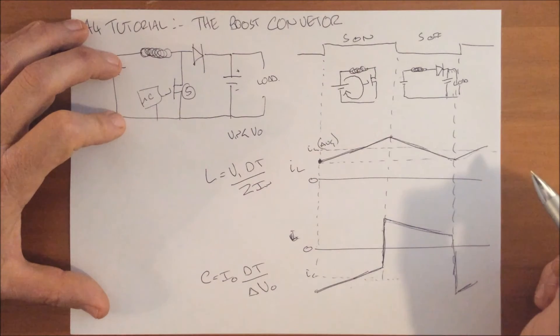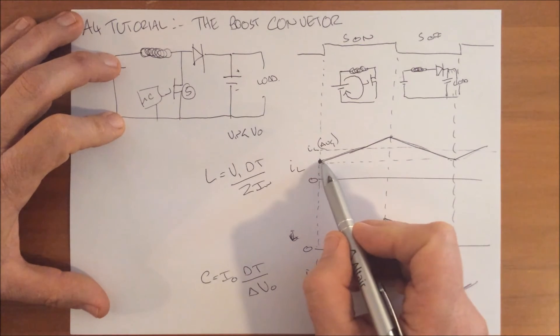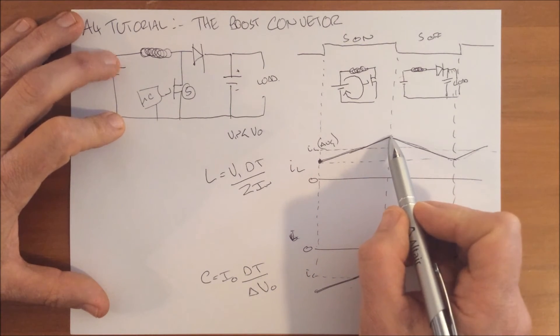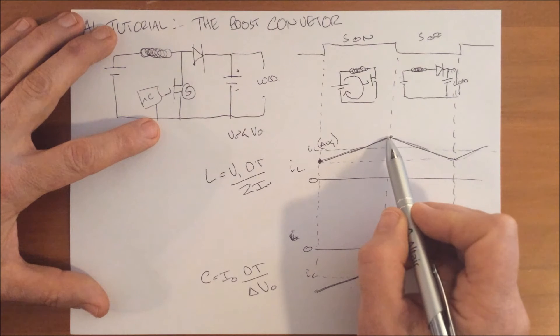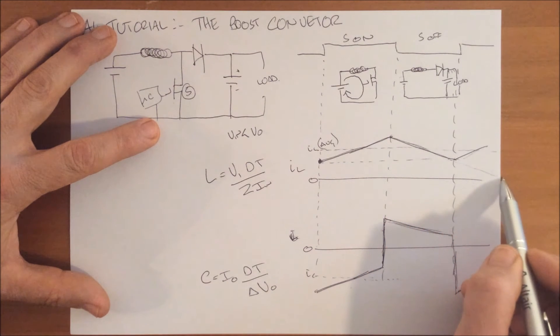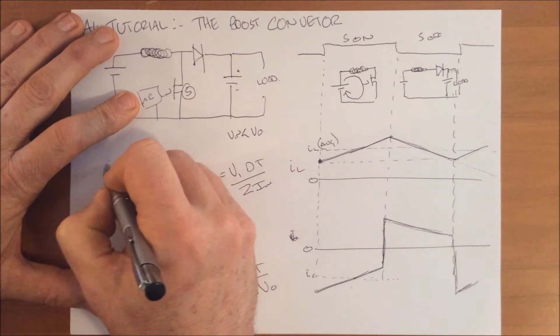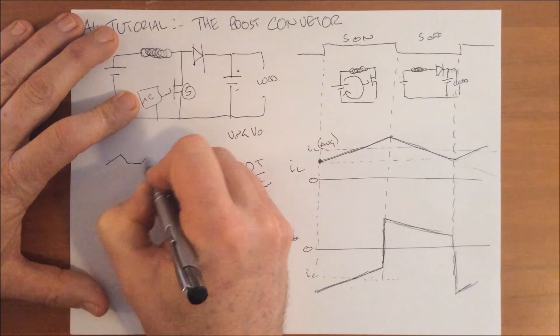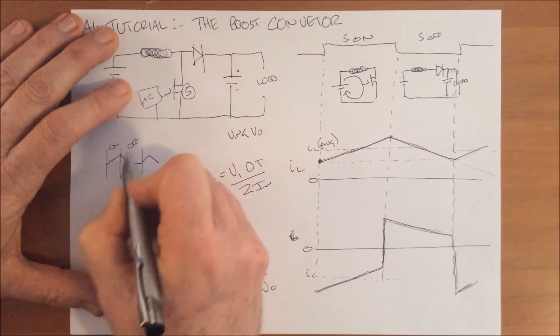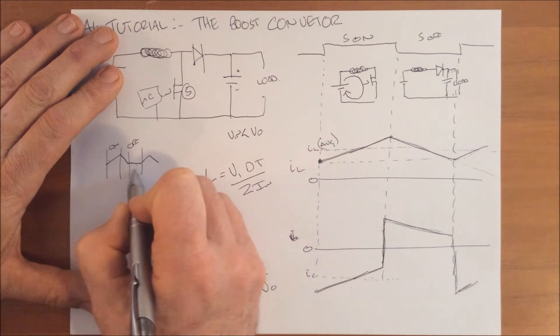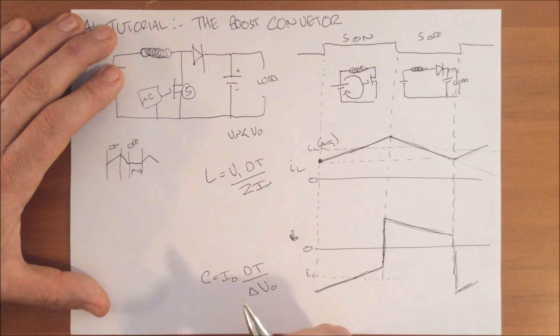I mentioned earlier about discontinuous mode. Discontinuous mode is when this charges up but it's turned off for either too long, or the inductor is not large enough to handle the amount of current being delivered. This discharge rate carries on until it gets down to a zero point and then goes flat. The current for this period in time is discontinuous - it is zero. This might be desirable or undesirable in certain applications.